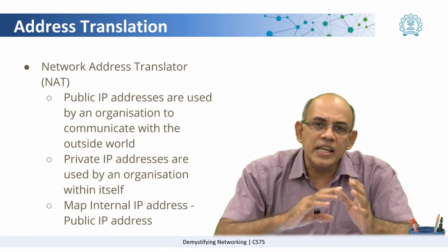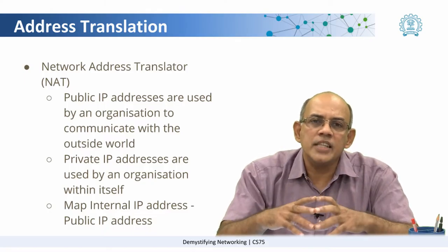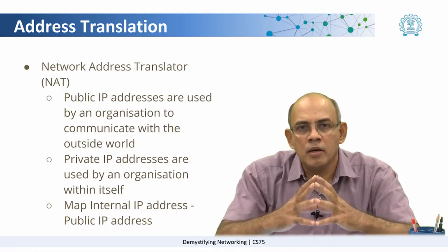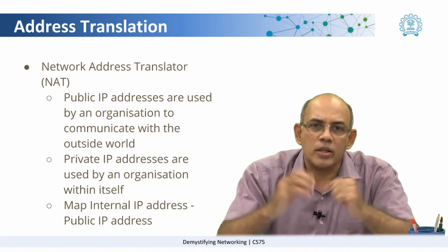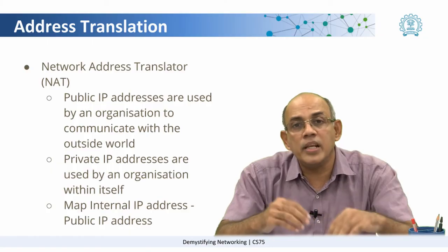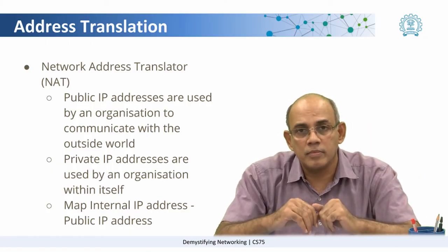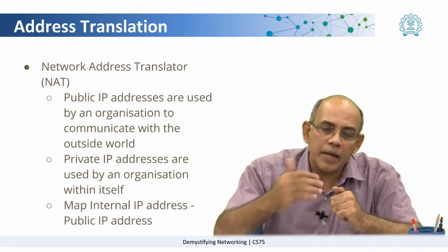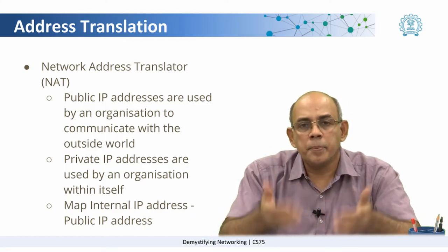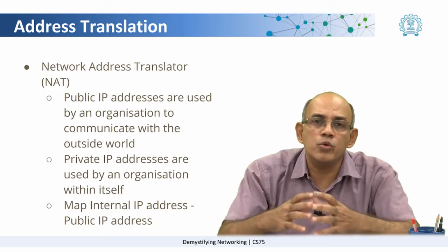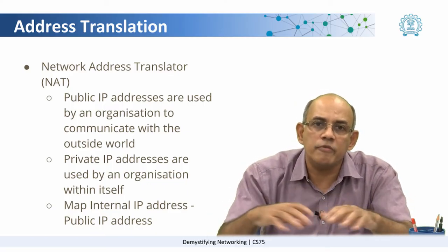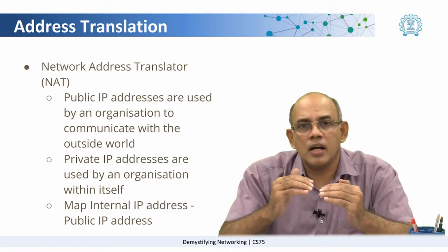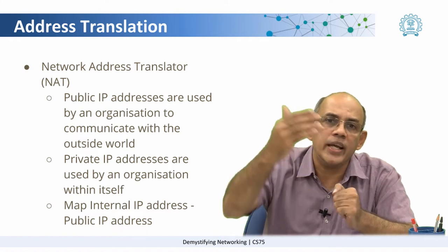In that way, the machine to which the packet has to be sent is identified. Going further, there are some addresses which have to be kept within an organization. For example, IIT Bombay may have thousands of computers. We don't want each of these computers to be visible on the internet or listed in some DNS server. So IP addresses are classified into public IP addresses and private IP addresses. Private IP addresses are what an organization uses within itself for communication among machines inside, while public IP addresses are the ones used to communicate with the rest of the world.